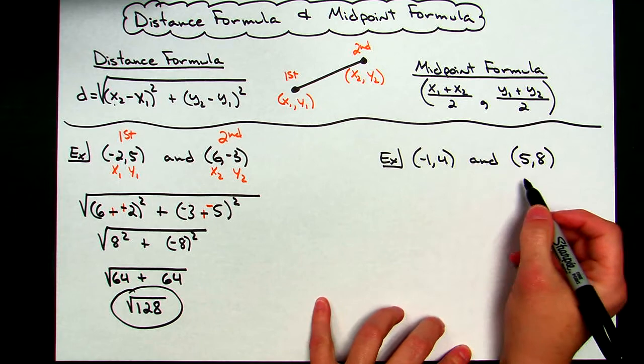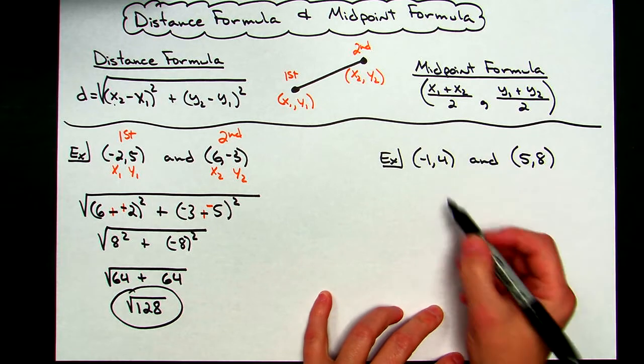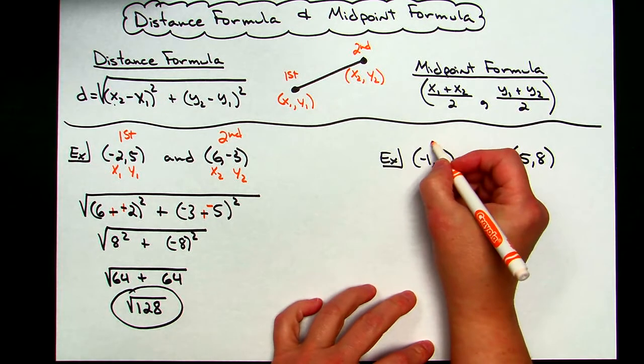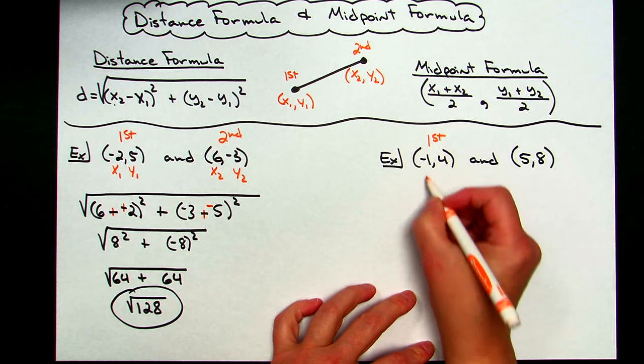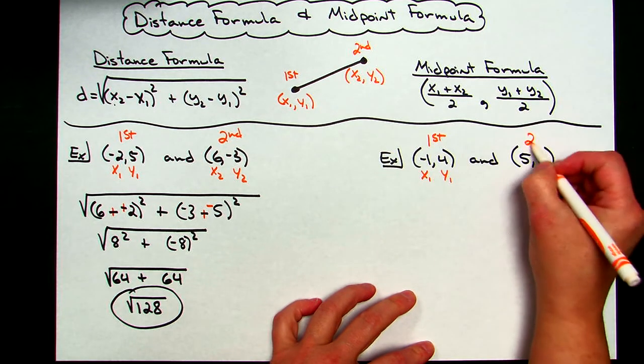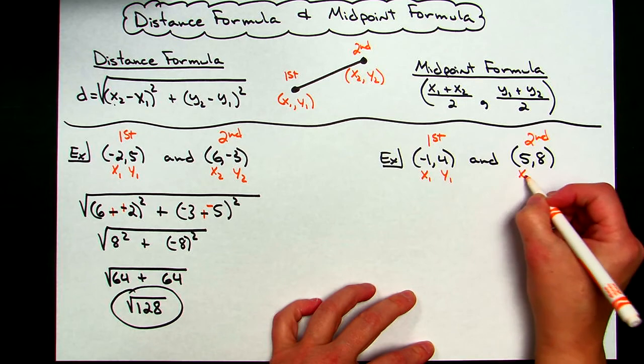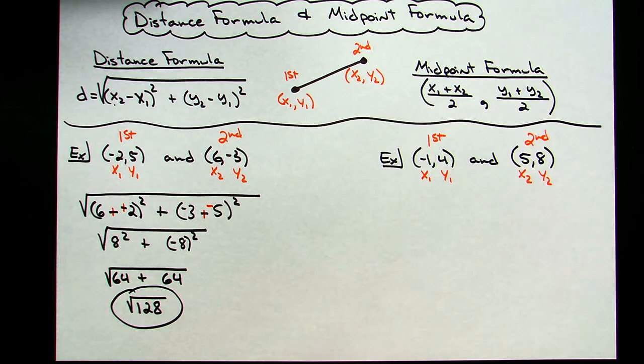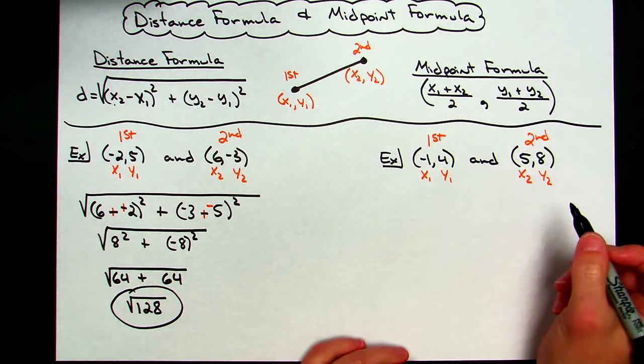Now for this example over here, I'm going to do the midpoint formula. Again, probably what I would do is I would label everything. This is the first point that they've given me, so this is x sub 1, and this is y sub 1. This is the second point, so this is x sub 2, and this is y sub 2. Now doing that's just going to make plugging into the formula a little bit easier.